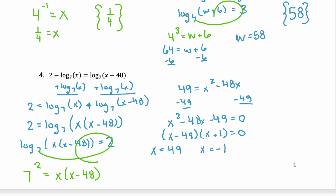Remember that most important step? We need to check those answers. So, we're looking back at our original. If we substitute x equals 49 in, do we ever end up having an argument that's negative? No, we don't. So, x equals 49 is a possibility. What if we plug in x equals negative 1? Well, this very first log, we'd be taking log base 7 of negative 1. We can't do that. So, our only solution here is 49.